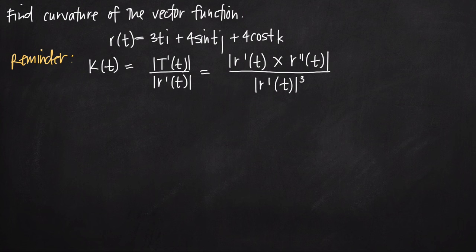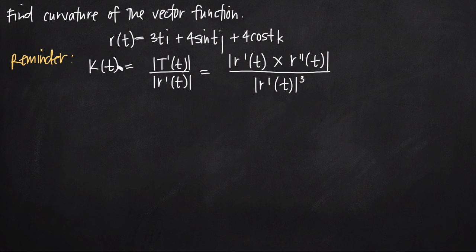When we're talking about curvature, we're basically talking about how much the function curves, or the sharpness of its turns as it moves in the positive t direction. We denote curvature with the Greek letter k, or kappa. What we're going to do is find an equation for curvature k in terms of t.